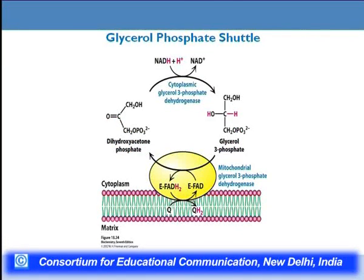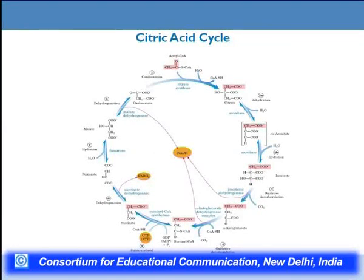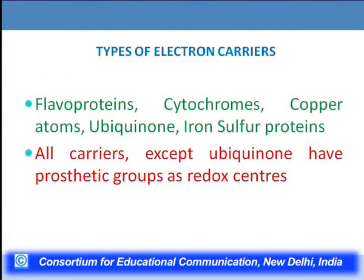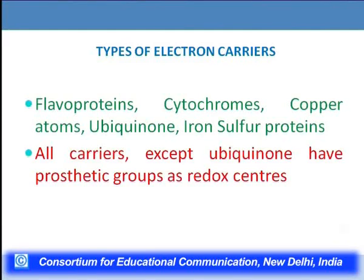The glycerol phosphate shuttle acts differently: it converts dihydroxyacetone phosphate to glycerol-3-phosphate, transferring reducing equivalents to FADH₂. In the citric acid cycle, 3 NADH molecules and 1 FADH₂ molecule are formed. These reducing equivalents are transferred by electron carriers in the mitochondrial matrix. The electron transport chain consists of flavoproteins, cytochromes, copper atoms, ubiquinone, and iron-sulfur proteins. All except ubiquinone have prosthetic groups acting as redox centers where oxidation-reduction reactions take place.